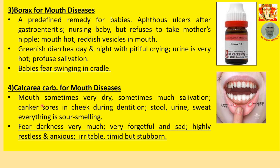Number 4: Calcarea Carbonica for mouth diseases. Mouth sometimes very dry, sometimes very much salivation. Canker sore in cheek during dentition. Stool, urine, and sweat — everything is sour smelling; this is characteristic of Calcarea Carbonica. Every emission from the body is sour smelling. General symptoms: Fear of darkness, very forgetful and sad, highly restless, anxious, irritable, timid but stubborn. These are general symptoms of the patient, not of the disease.